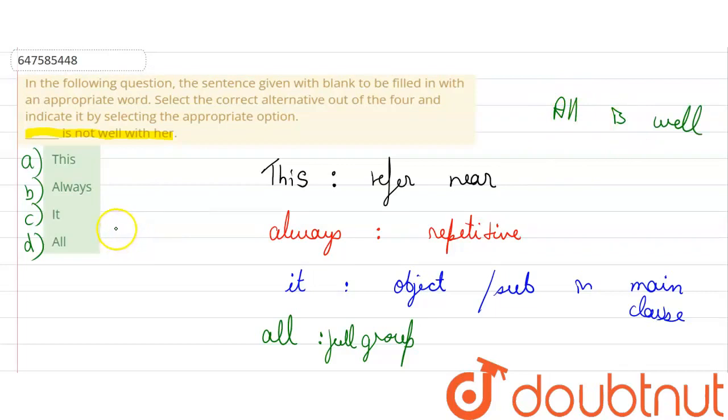You are talking about all the things, as in all the situations, which will be the correct option. That is option number D. Here you are correct. All is not well. All is not well. Thank you.